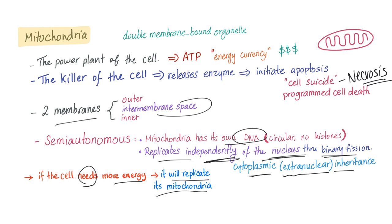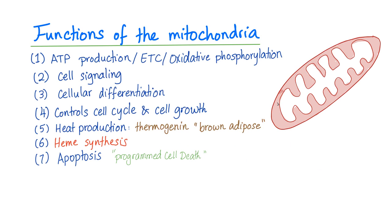Cardiac myocytes need a lot of energy, so they will have lots of mitochondria — form follows function. Functions of the mitochondria are numerous: ATP production, electron transport chain also known as oxidative phosphorylation, cell signaling, cellular differentiation, cell cycle control, cell growth, cell death, and heat production such as in brown adipose tissue, also known as thermogenin.